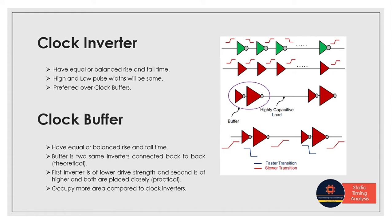Clock buffers are theoretically two identical inverters connected back to back. But practically, the situation is different. To save area—because two inverters back to back consume more space—the implementation differs. Since we're moving to lower nodes, this causes issues. To save area, the first inverter typically has lower drive strength than the second inverter.